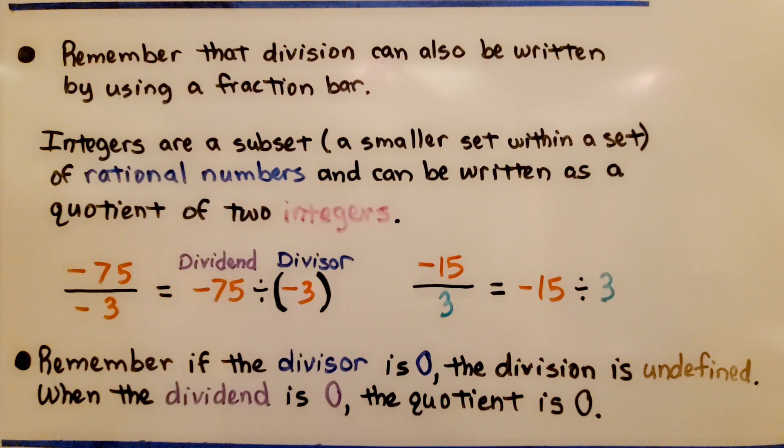Remember that division can also be written by using a fraction bar. Integers are a subset, a small set within a set of rational numbers and can be written as a quotient of 2 integers. So, it can be written as a fraction, negative 75 divided by negative 3.